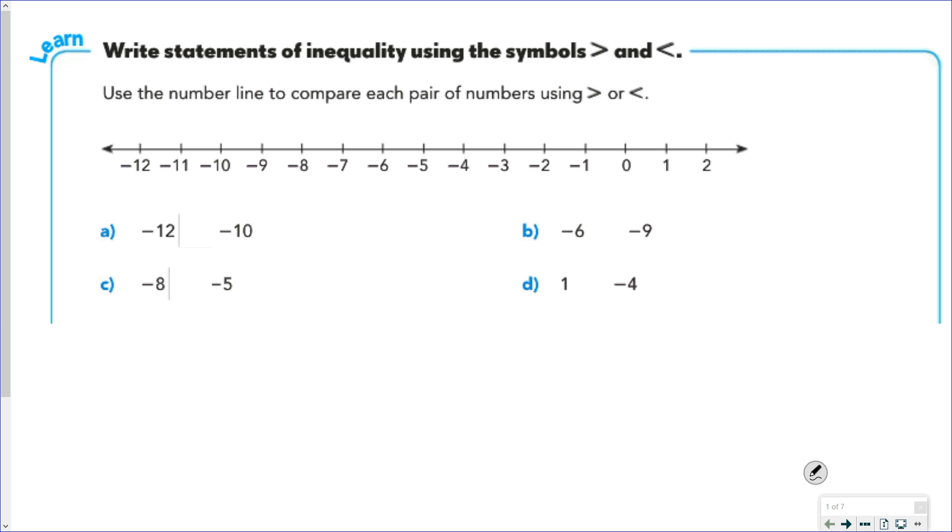So our first example here, we have negative 12, and we're comparing that to negative 10. If we look at our number line, here's negative 12, and here's negative 10. And as we've established, as you move to the right on the number line, the value increases. So if it increases as you move to the right, it'll decrease as you move to the left. And since negative 12 is farthest left, it will have less value than negative 10.